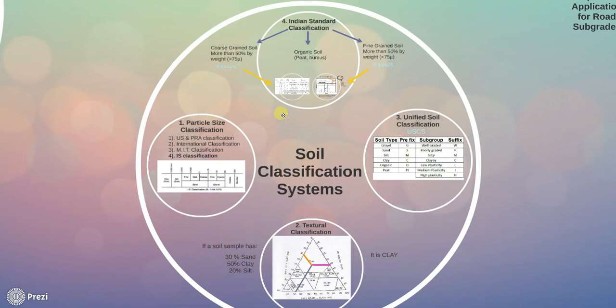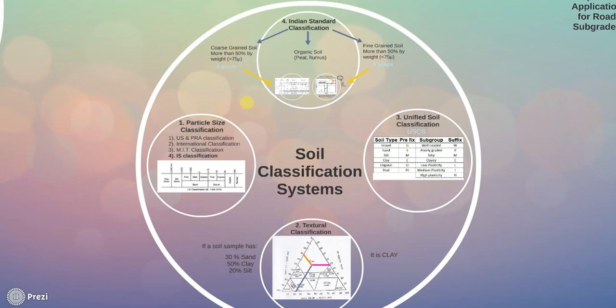Soil classification systems are divided into many types. Basically, the size of individual particles has an important influence on the behaviour of soils. In the particle size classification, soils are designated according to the grain size or particle size. Terms such as gravel, sand, silt, and clay are used to indicate grain sizes. These terms are used only as designation of particle size and do not signify the naturally occurring soil types. A number of grain size classifications have been evolved but the commonly used ones are discussed here.